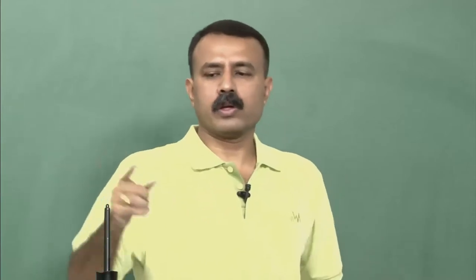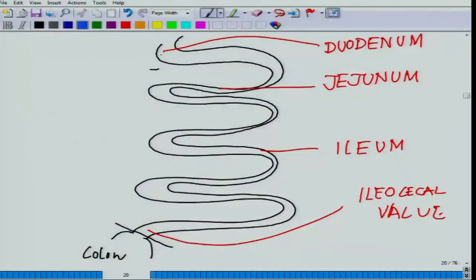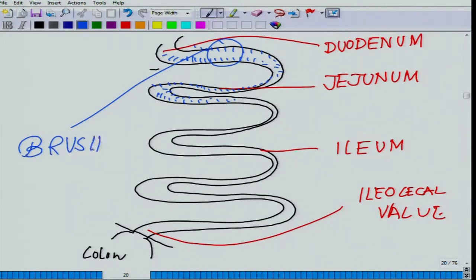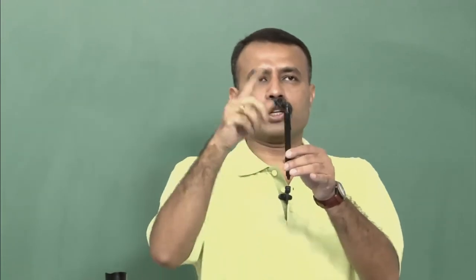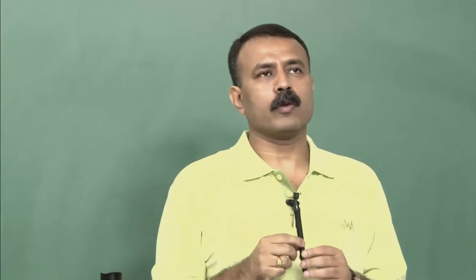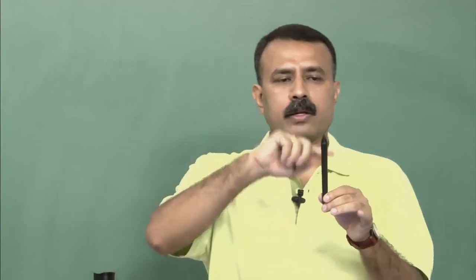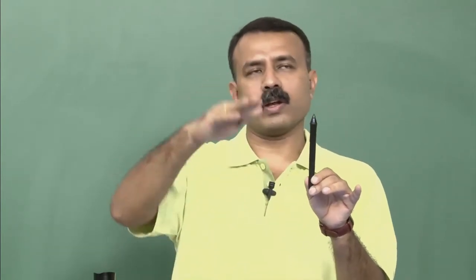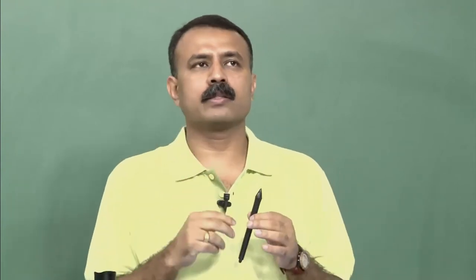This whole tube has hairy borders all over inside, and this border is essentially what is termed the brush border. Those projecting structures are called villi. So essentially, the food particles move all along the villi, enhancing the surface area many, many folds by creating that villi-like structure. This is how biology designs its structure so that in a very limited space you can maximize your output.